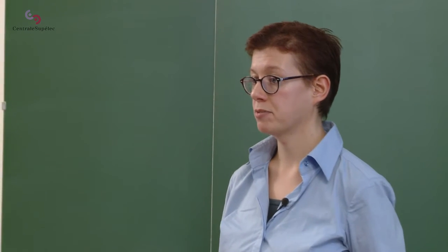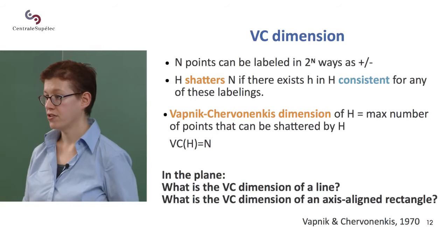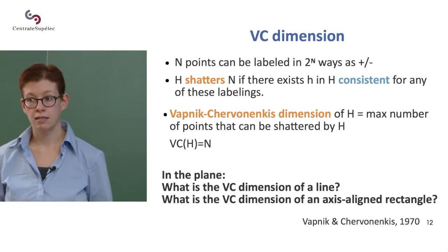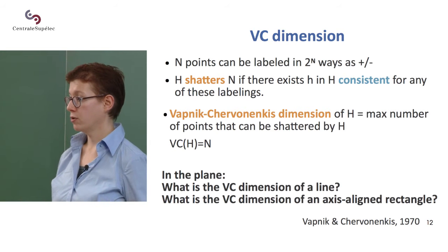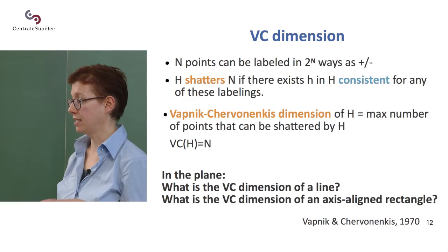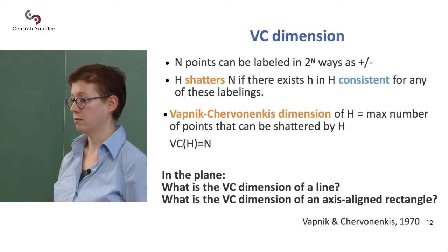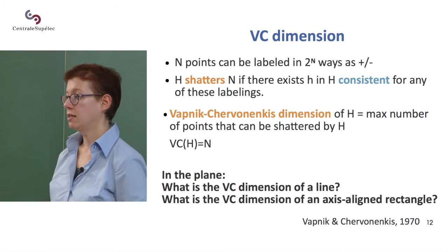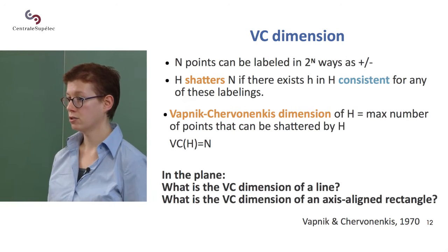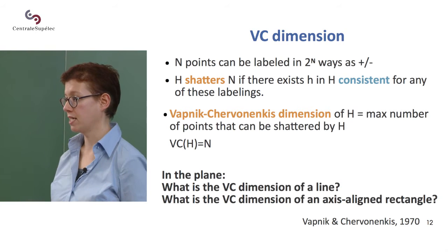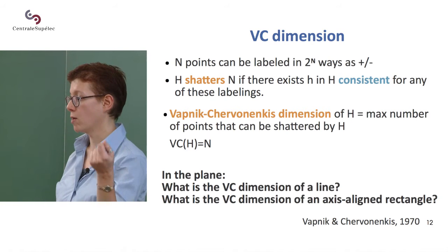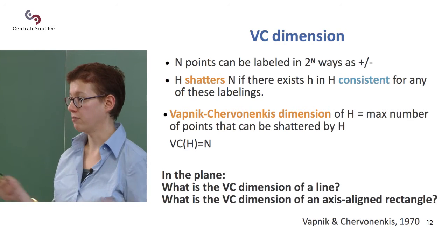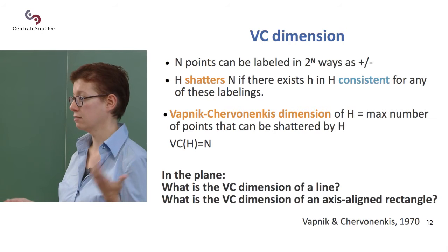This relies on the concept of shattering. Imagine you have n data points. They haven't been assigned any labels — you just have n data points in the space. There are two to the n ways of assigning zero or one labels to them, since each point can have zero or one. With n points, that's two to the n different combinations.